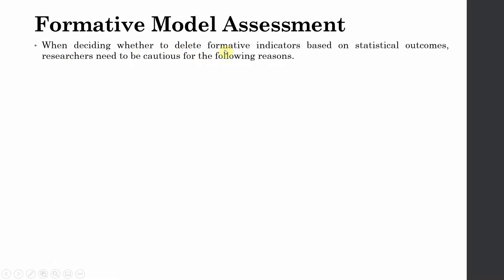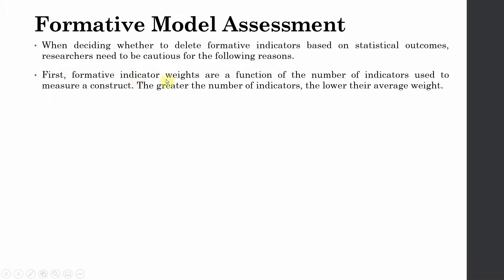When deciding whether to delete formative indicators based on statistical outcomes, researchers need to be cautious for the following reasons. First, formative indicator weights are a function of the number of indicators used to measure a construct. The greater the number of indicators, the lower their average weight. So they are inversely proportional.